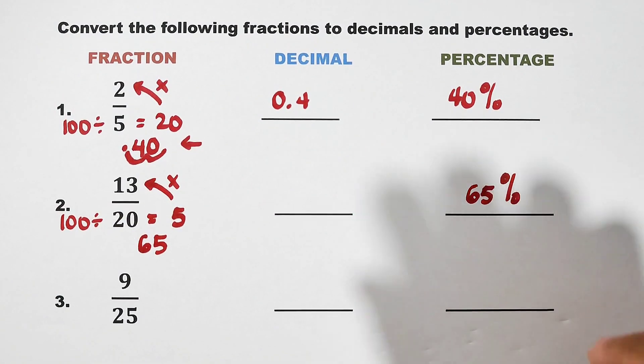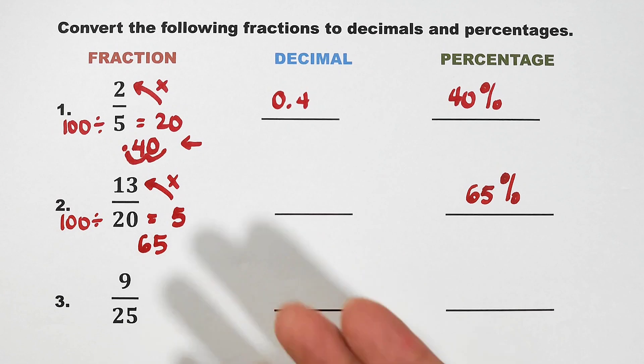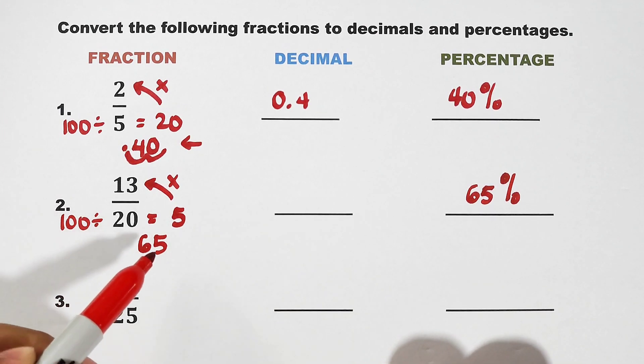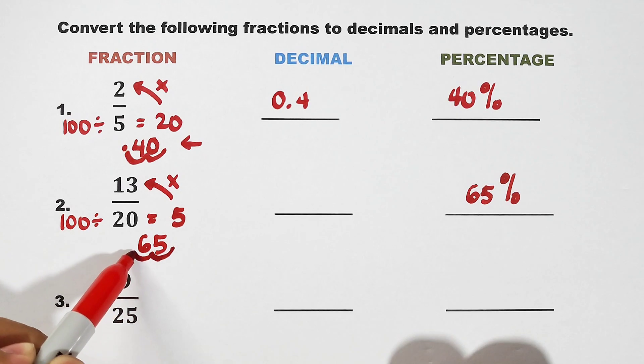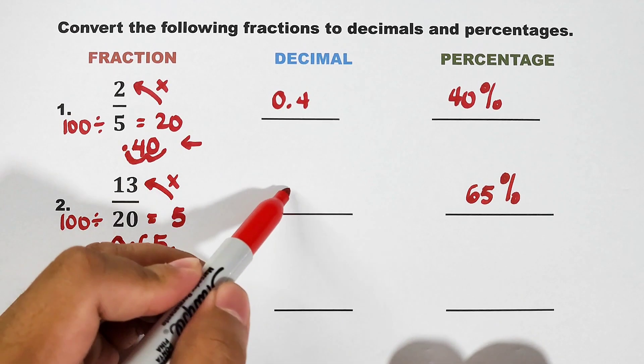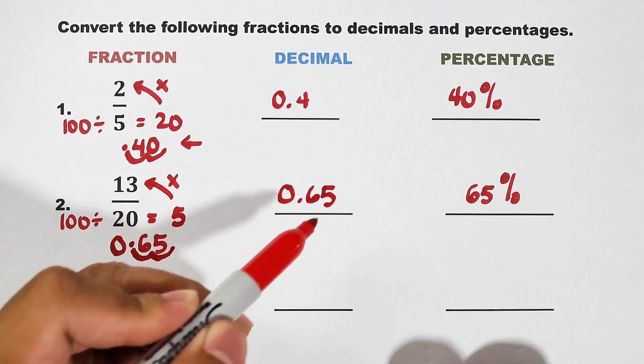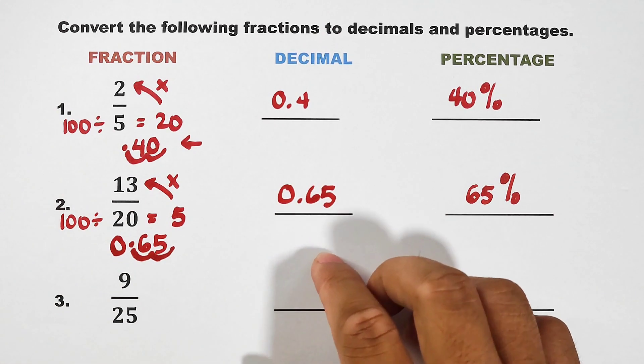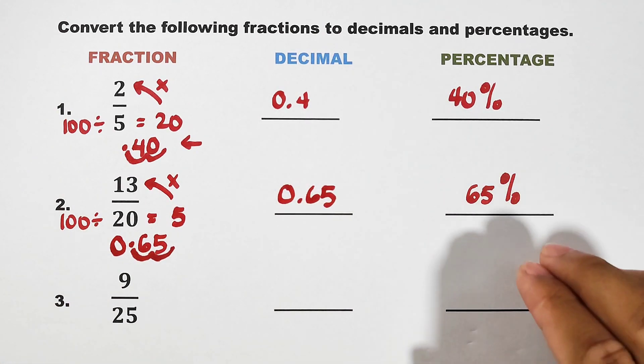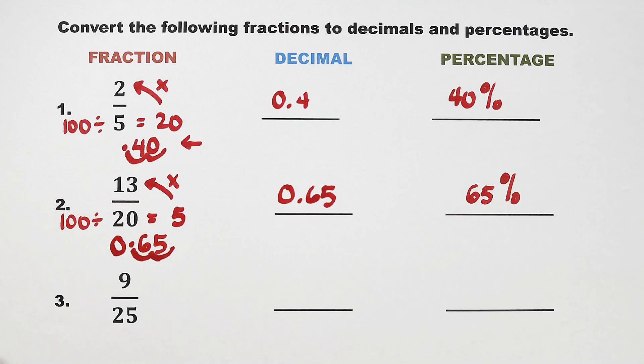So after that, we still have to find the decimal. Move the decimal point from here going to left, 2 units. So you have 0.65. And as you can see, 13 over 20 in decimal is 0.65. In percentage, that is 65%.